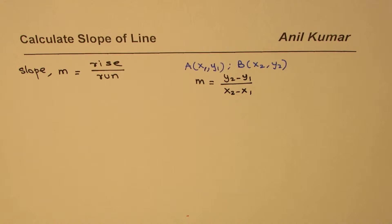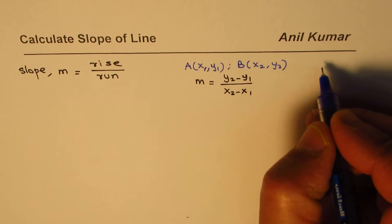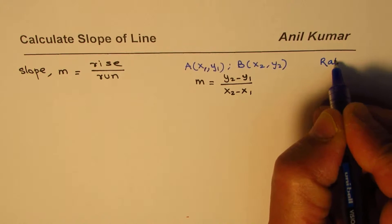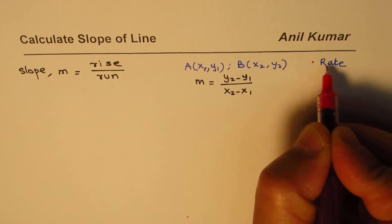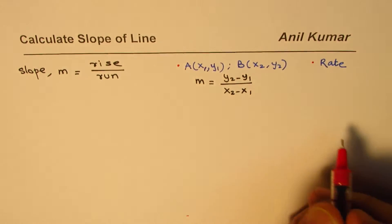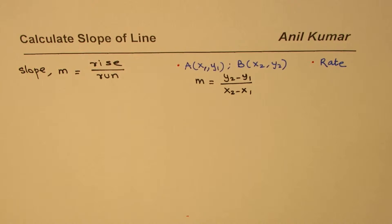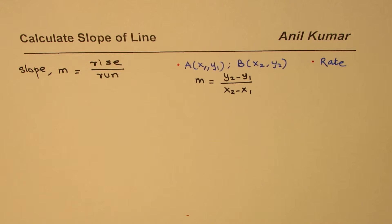That also gives you slope of a line, and in some applications we may have rate. In those applications, rate itself will be slope of the line. These are different ways in which we can find slope of a line.